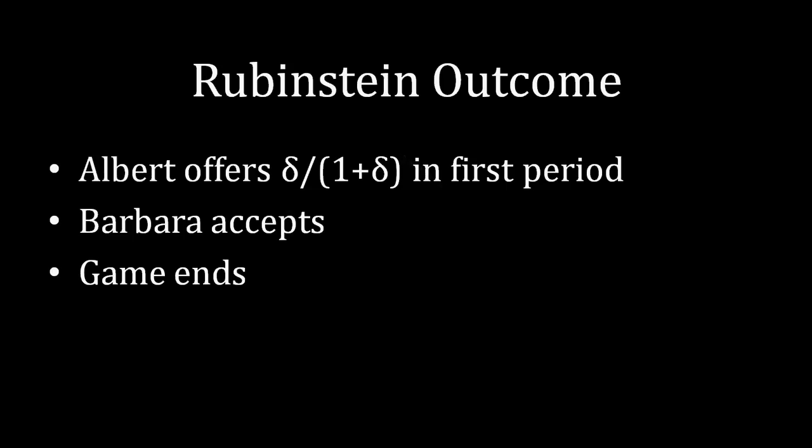Last time we analyzed why the Rubinstein outcome is what it is. So in this alternating offers Infinite Horizon game, we see Albert offering δ/(1+δ) in the first period, Barbara accepts, and the game immediately ends. So the previous lecture is why that's the case. This lecture is the what. What's going on here, and how do the players actually internalize the outcome of this game?